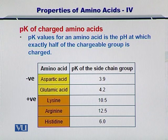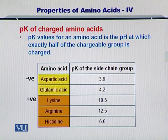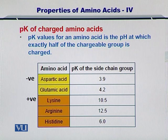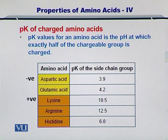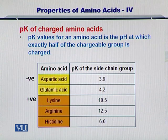For any given amino acid, if you take 100 molecules and 50 of them are charged and 50 are not charged, then that pH will be the pK value for that amino acid. The negatively charged amino acids — aspartic acid and glutamic acid — have pK values of 3.9 and 4.2. For the positively charged amino acids — lysine, arginine, and histidine — the pK values for the side chain are 10.5, 12.5, and 6.